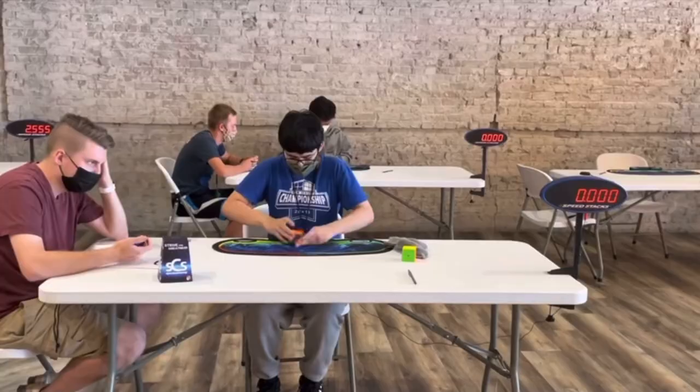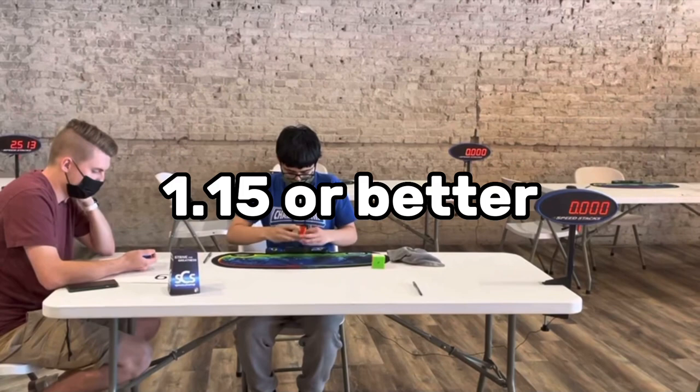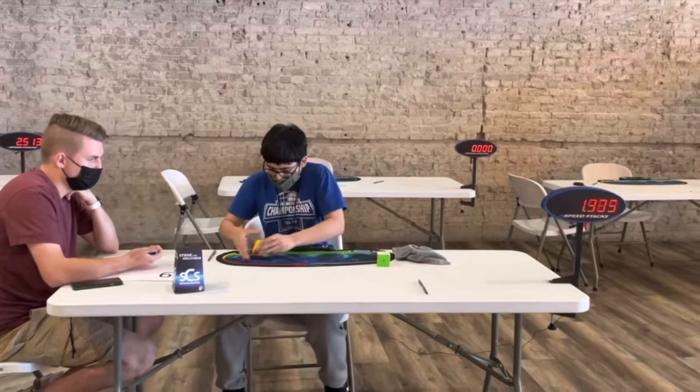Counting two sub 1s, Zayn needed a 1.15 or better to finally break through the sub 1 barrier officially. But then, it takes a turn for the worst. Zayn fumbles and gets a counting 2.47, ruining the entire average.